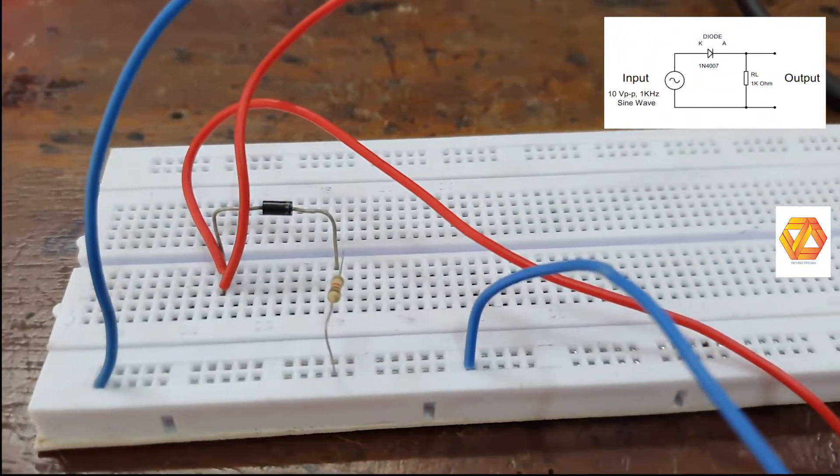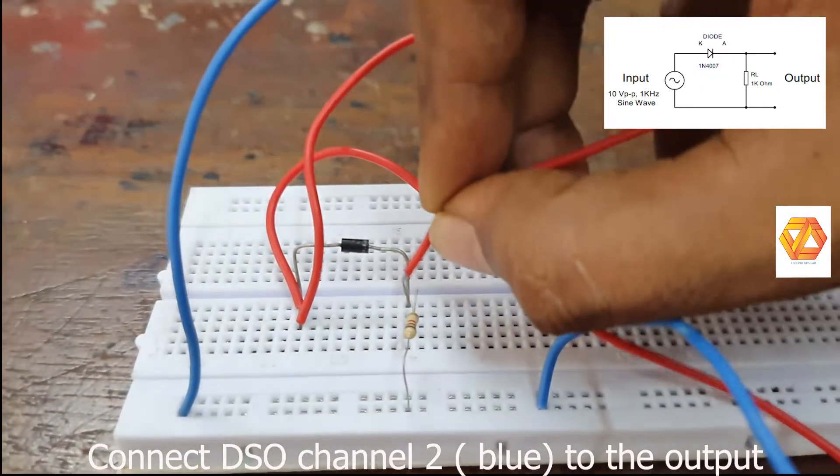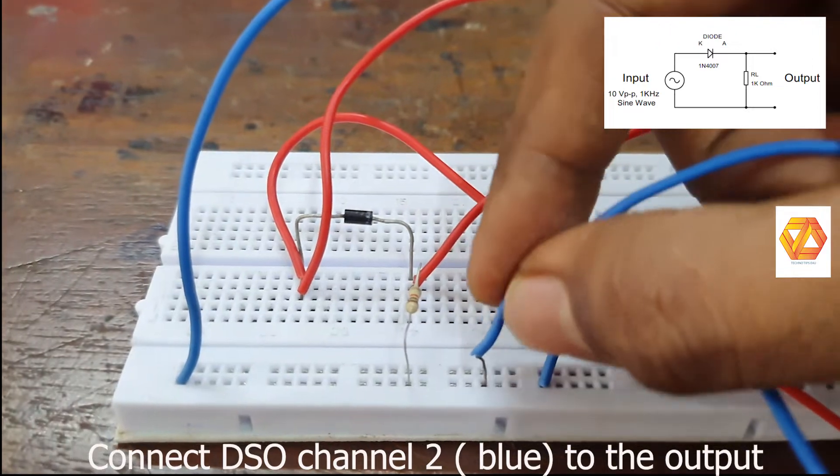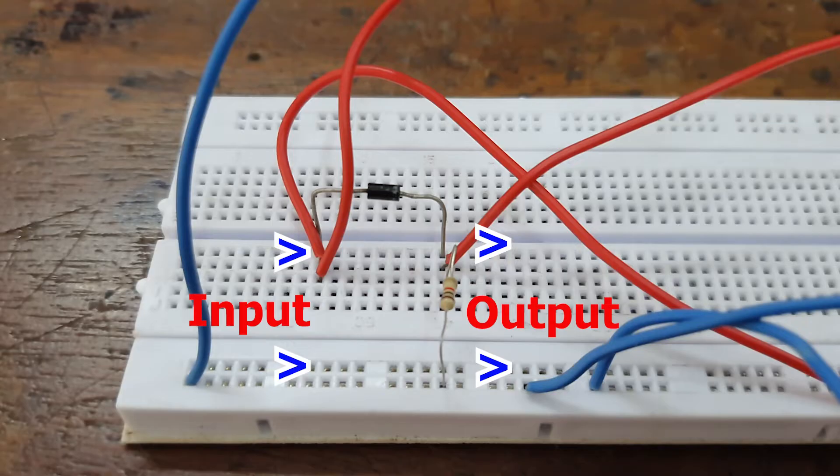Then to see the output, connect DSO channel 2 across the load resistor. We are taking the output from the load resistor, so DSO channel 2 is connected across the 1 kilo-ohm load resistor. Now you can see the input and output.